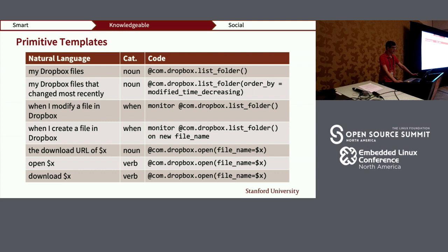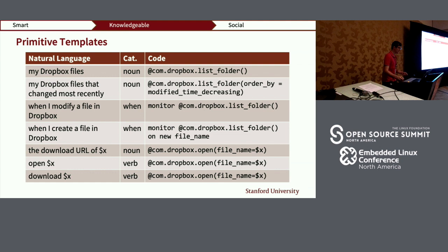What are these templates? In Thingpedia, we have information about both how the API is used in code and in natural language. The same API can be used in many different ways — for example, the list folder API for Dropbox can list a folder, list my files, list files changed most recently, notify when the list of files changes, or notify when a new file is created. Also, the same function like 'open' could be referred to both as a noun (the download URL of a file) and as a verb. Existing techniques associating a unique natural language expression to every API are therefore not sufficient.